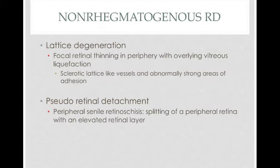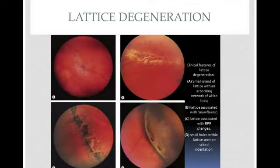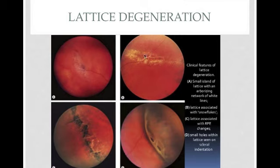Lattice degeneration is the next cause of non-rhegmatogenous retinal detachment. It is defined by focal retinal thinning in the periphery where the overlying vitreous undergoes liquefaction. As you can see in this image, there are white areas and speckles indicating thinning of the peripheral retina. The detachment typically occurs at the border between the normal and abnormal retina.